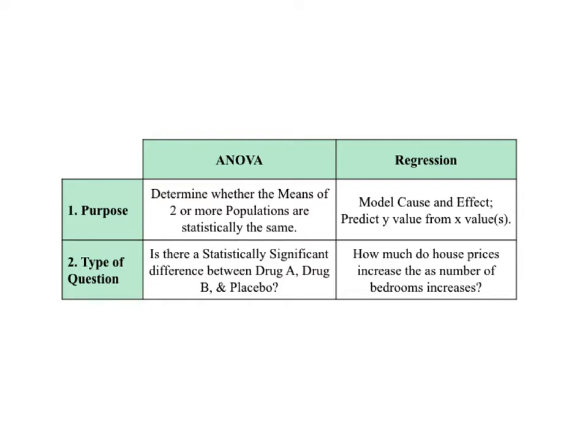Regression. The purpose of regression is very different. It attempts to produce a model in the form of a formula for a regression line or curve, which can be used to predict the values of the Y dependent variable given values of one or more X independent variables. Regression goes beyond mere correlation to attempt to establish a cause and effect relationship between the X variables and the values of Y. The answer to the question is the formula for the best fit regression line or curve — for example, house price equals $200,000 plus the number of bedrooms times $50,000.